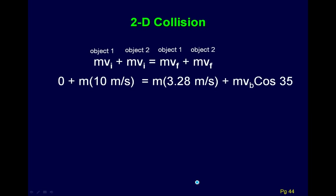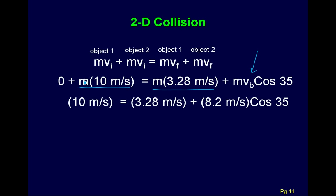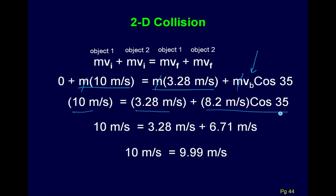We can also verify with the x-direction equation. Initially the gray puck was going at 10 m/s. Afterwards, the gray puck contributes 3.28 and we just solved VB = 8.2 m/s. Canceling the masses, we get: 10 = 3.28 + 8.2 × cos 35°. Adding those up, within calculational error, it checks out. That confirms our answer is correct.